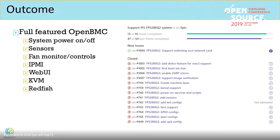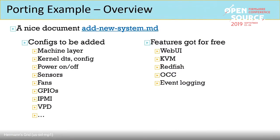We have a nice document at OpenBMC docs that introduces the whole process of adding a new system. The things to do are: add configurations — you need to add a machine layer to build a new machine, add the kernel device tree configurations, and then add JSON or YAML configs for power on/off, sensors, fans, GPIOs, IPMI, and VPD.